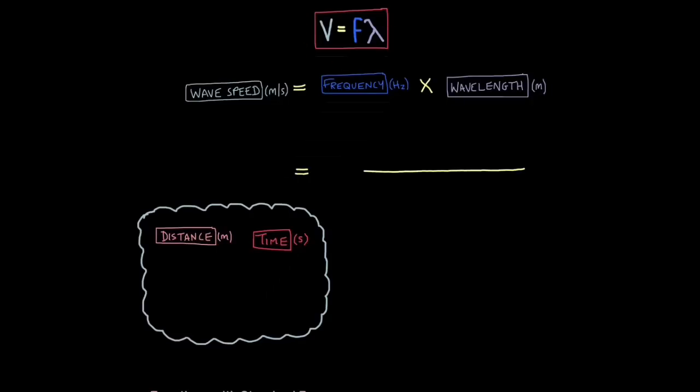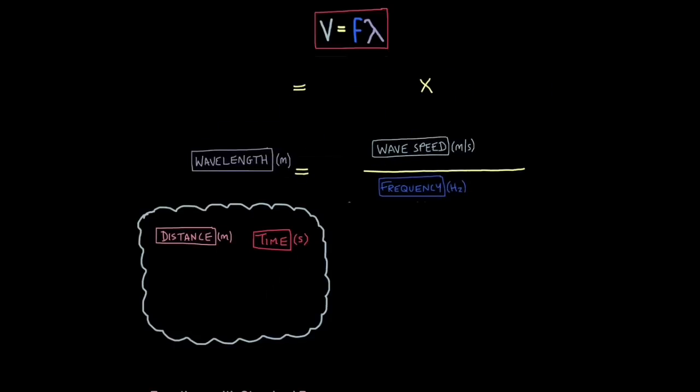For example, wave speed divided by frequency is wavelength, or wave speed divided by wavelength is frequency. If you're not sure how to rearrange equations, I'll do a very quick separate tutorial on how to rearrange equations, and not go into it here.